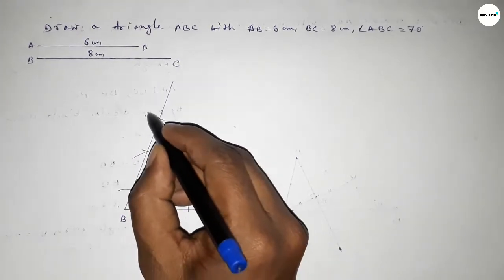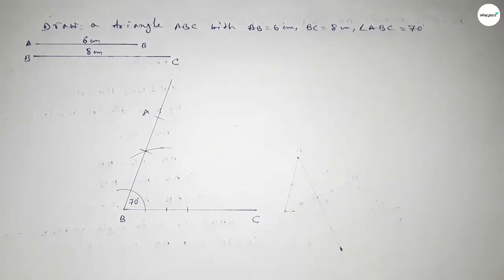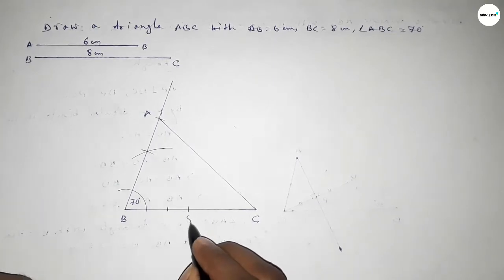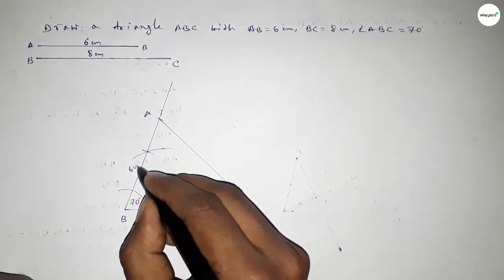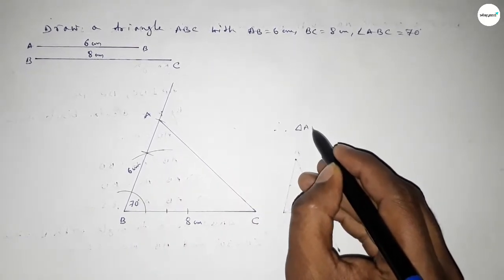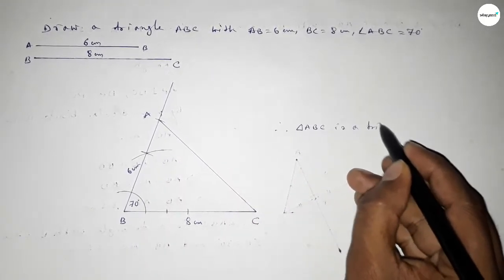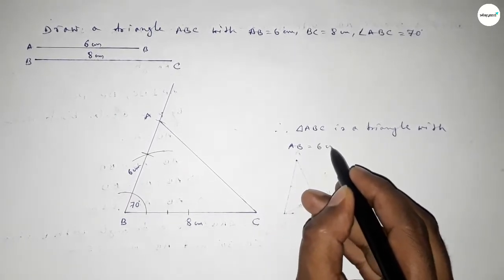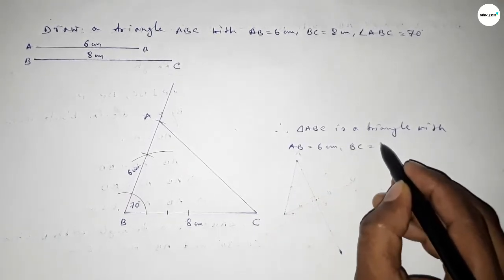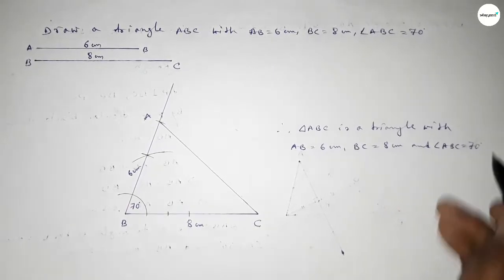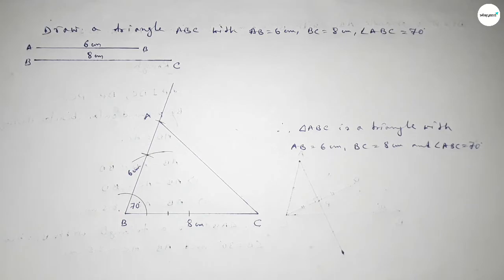Cutting here to take point A. Now joining A and C to get triangle ABC. So this side is 8 centimeters and this one is 6 centimeters. Therefore, triangle ABC is constructed with AB equal to 6 centimeters, BC equal to 8 centimeters, and angle ABC equal to 70 degrees. That's all — thanks for watching. If this video is helpful to you, please share it.